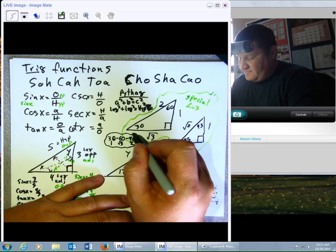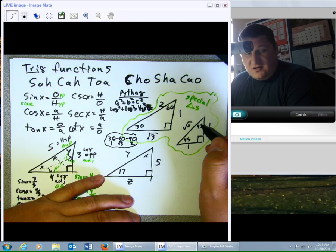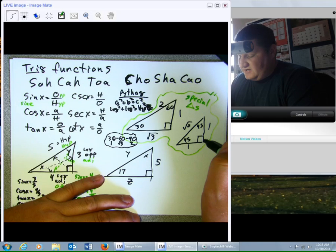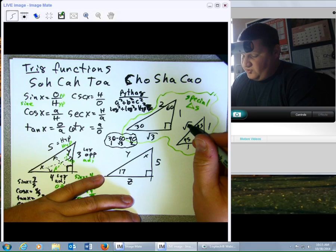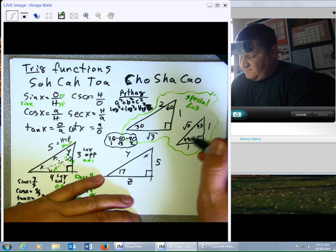Now, over here you have another special triangle, which is a 45, 45, 90 triangle. The 45, 45, 90 triangle is 1, 1, root 2. Now, it makes sense that if these two angles are the same, according to the isosceles triangle theorem, the sides opposite congruent angles must be congruent.